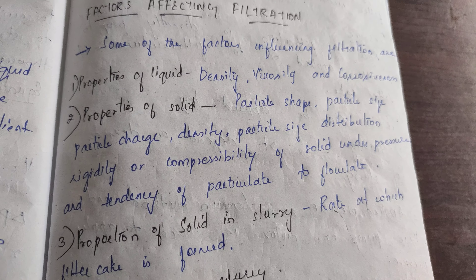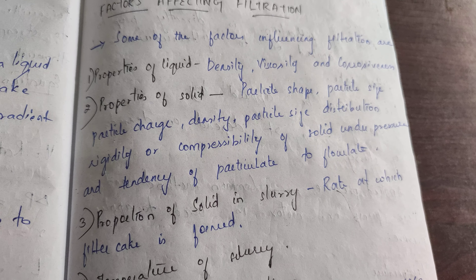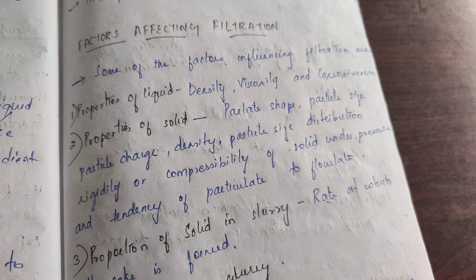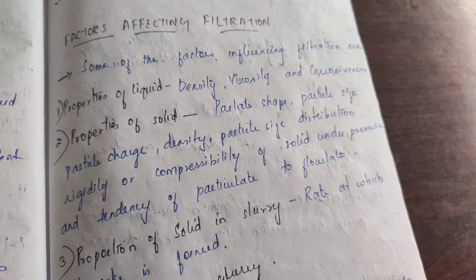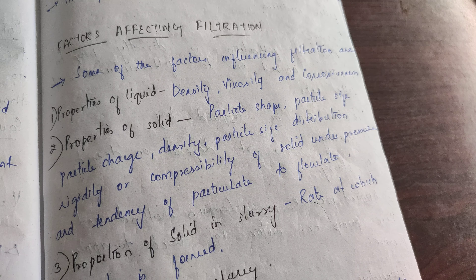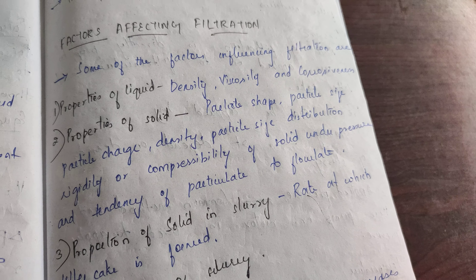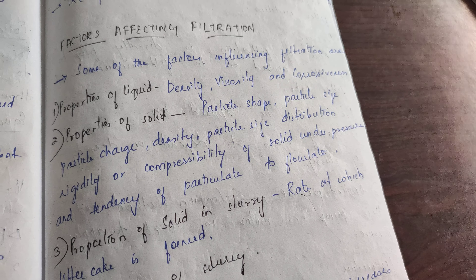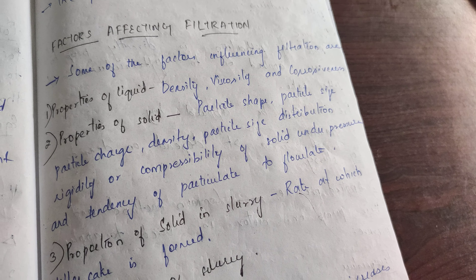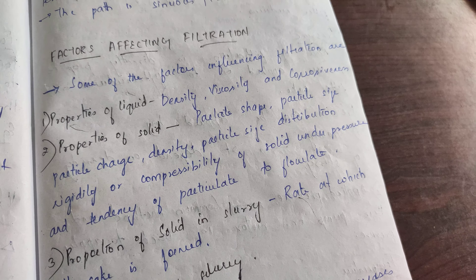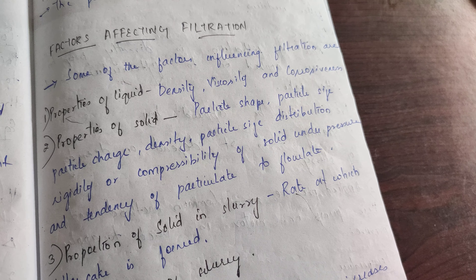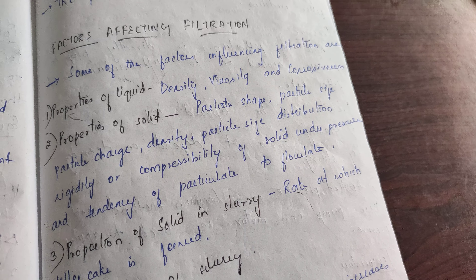Different factors affect the rate of filtration. The process of filtration is affected by the slurry being used, by the solids present in the slurry, and by the filtrate. The first factor is the property of the liquid — liquid density, liquid viscosity, and liquid corrosiveness. The second factor is the property of the solid — particle shape, particle size, particle charge, particle density, and particle size distribution.